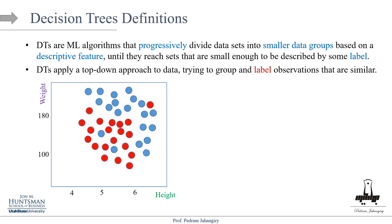Part one: definitions. Decision trees are machine learning algorithms that progressively divide datasets into smaller data groups based on a descriptive feature. Based on those features, it divides the dataset progressively until they reach sets small enough to be described by some label. That label can be quantitative or qualitative. If qualitative, it's decision tree classification; if quantitative, it's decision tree regression. Decision trees apply a top-down approach, starting at the very top of the tree and coming down, trying to group and label observations that are similar to each other.